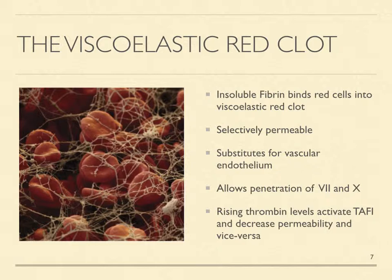Rising thrombin levels activate thrombin-activated fibrinolysis inhibitor, or TAFI, which strengthens the clot, reduces its permeability, and decreases thrombin generation. Declining thrombin levels reduce the activity of TAFI, which increases the permeability of the clot and increases thrombin generation. The clot thus regulates thrombin generation in the damaged tissues within a narrow range that optimizes cellular tissue repair activities and prevents excessive thrombin levels that cause malignant repair cell hyperactivity.